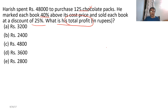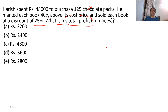If cost price is 100, then mark price will be 140 because it's 40% above cost price. On 140, a 25% discount is applied — 25% is one fourth. 140 divided by 2 is 70, divided by 2 again is 35, so the discount is 35. 140 minus 35 equals 105. Cost price is 100, selling price is 105, so profit is 5%. Five percent of 48,000: 10% is 4,800, so 5% is 2,400.